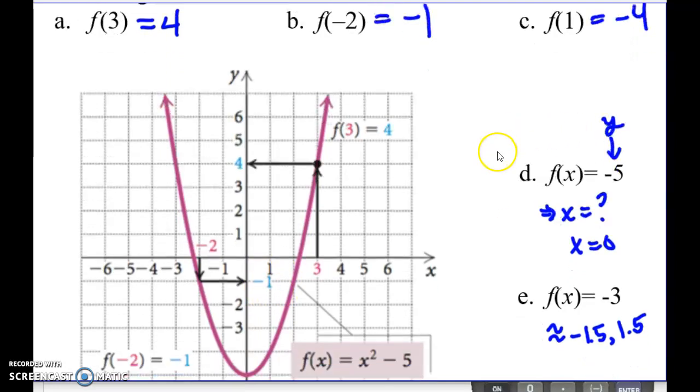All right, so one that doesn't have a help on there for us is f of 1. So here is 1. The graph, if I go up, I won't hit it, so I have to go down, and this is the point at which I hit it right here, and that's going to be over here at what would be negative 4.